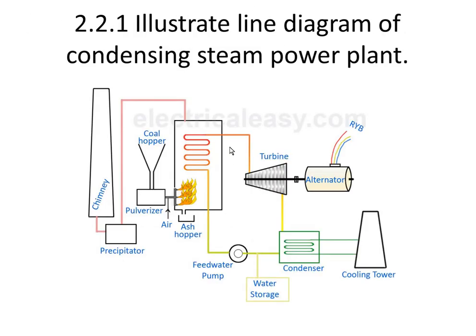In this case, the water pump circulates water. This is the steam generator, this is the turbine, and the turbine is connected to the generator. The turbine exhaust is fed into the condenser, which is used for cooling. There is water storage used for the boiler. This circuit includes the boiler, coal hoppers, furnace, and exhaust gas. This is the condensing steam power plant diagram.